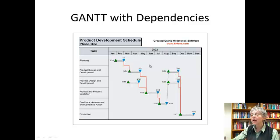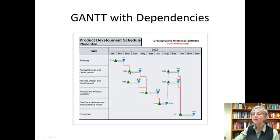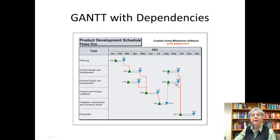The next example shows a Gantt chart with dependencies. The little red lines mean we have to finish one phase before starting the next — anything connected with a red line from blue to green means the blue one has to be finished before we start the green one. So first there's planning, then product design and development, while process design and development takes place concurrently. Both of those lead into validation, then a feedback and corrective action step that takes us back to another iteration of the design process. Normally it takes a couple of iterations to get all the kinks out, and then finally we go into production.